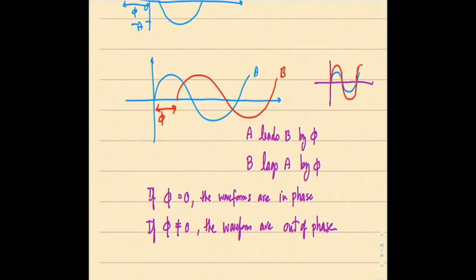So for that graph, A and B are out of phase. Specifically, A leads B by φ, or you can say B lags A by φ. Two terms: leading and lagging, and the terms in phase and out of phase.